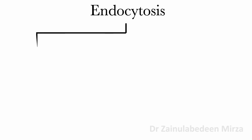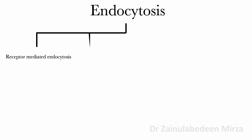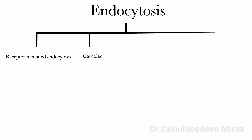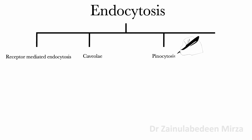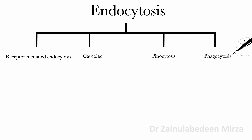The endocytosis pathway is subdivided into four types: receptor-mediated endocytosis, caveolae, pinocytosis, and phagocytosis.